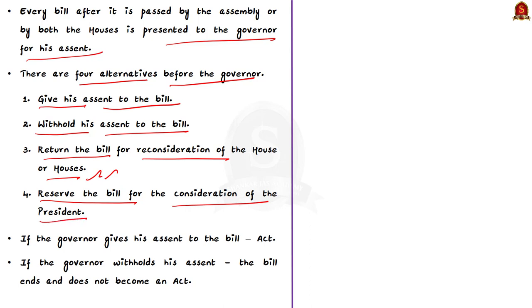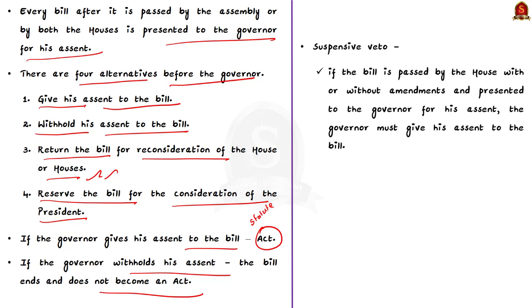If the Governor gives assent, the bill becomes an Act and is placed on the statute book. If the Governor withholds assent, the bill ends. The Governor can also return the bill for reconsideration. But if the bill is passed by the house with or without amendments and presented to the Governor again, the Governor must give his assent. Thus, the Governor enjoys only a suspensive veto in this case.